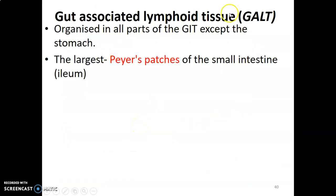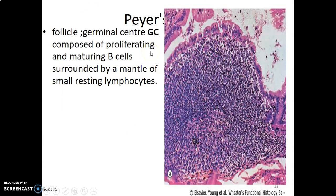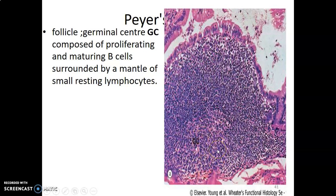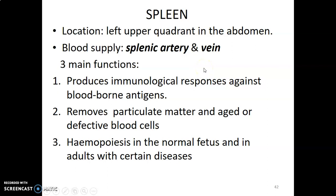Gut-associated lymphoid tissue (GALT) consists of lymphoid follicles within the wall of the GI tract. A prime example is the Peyer's patches found in the ileum. These also contain lightly-staining germinal centers composed of maturing B cells, with the mantle zone containing small resting lymphocytes, consistent with the follicular pattern seen elsewhere.